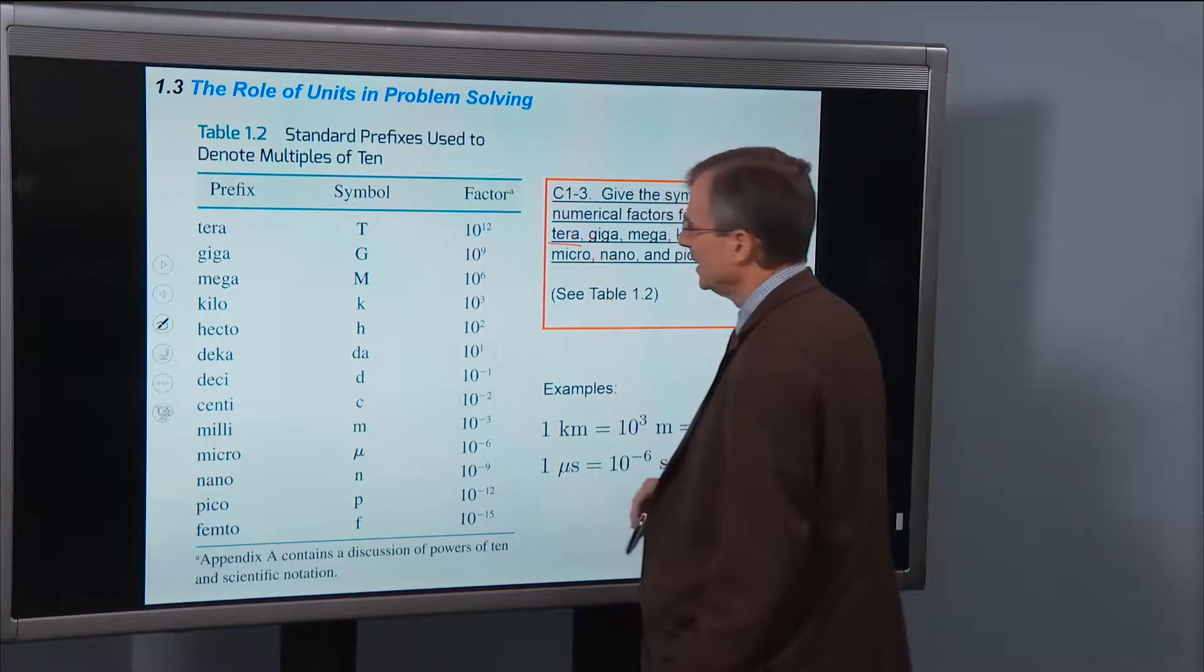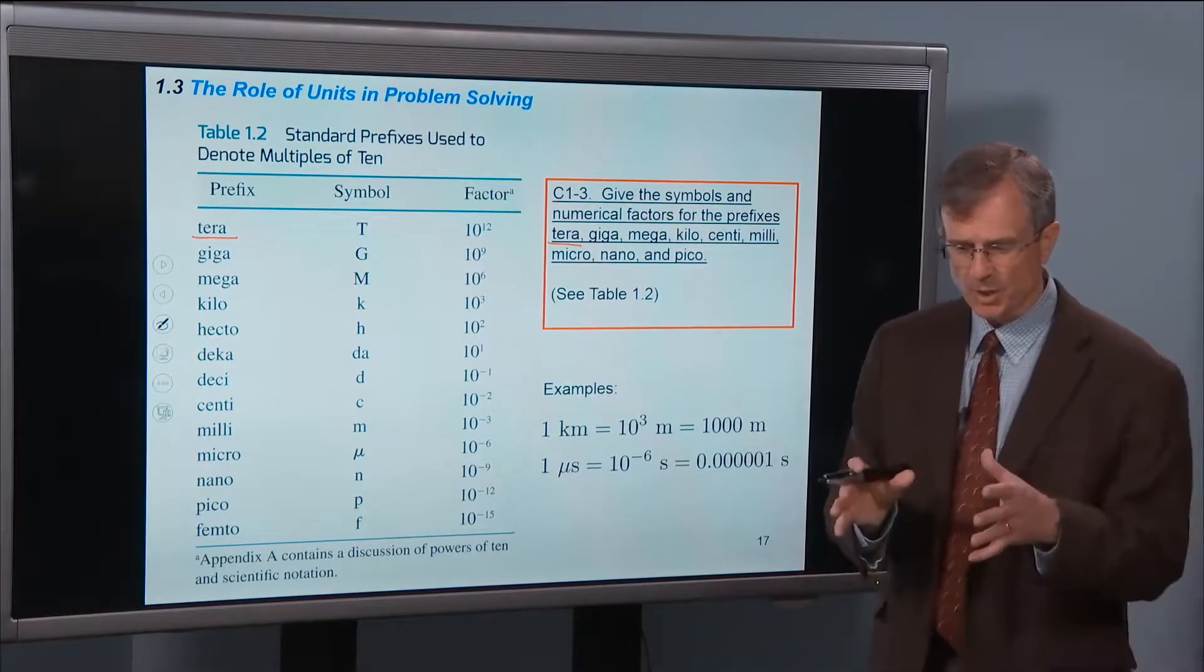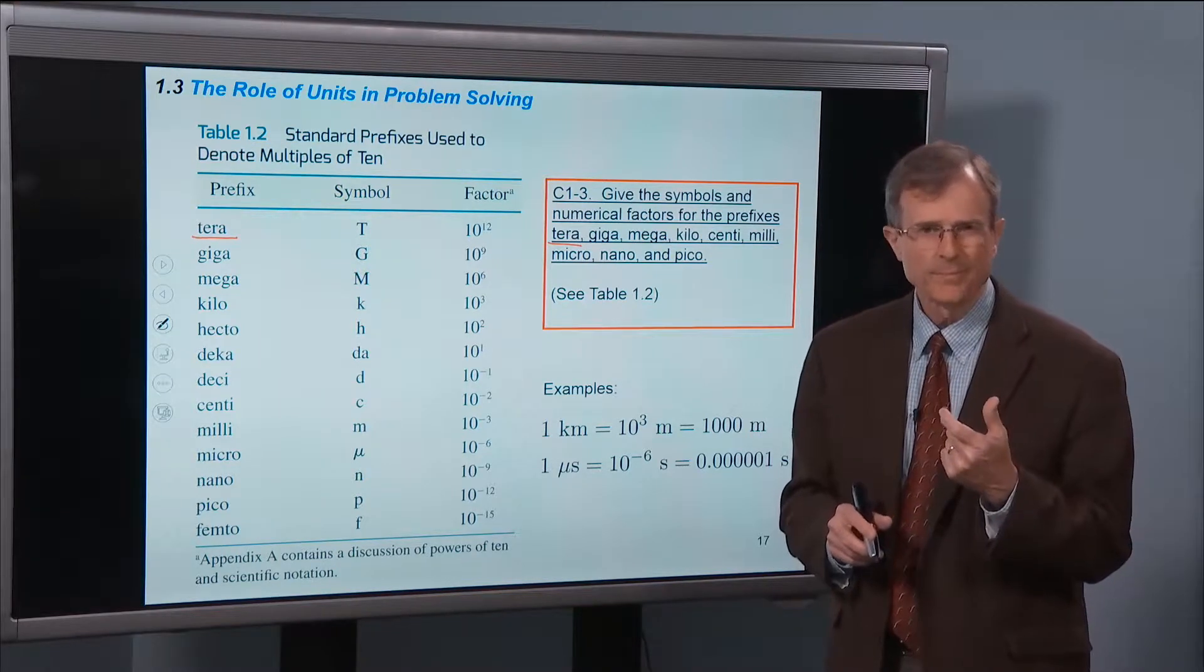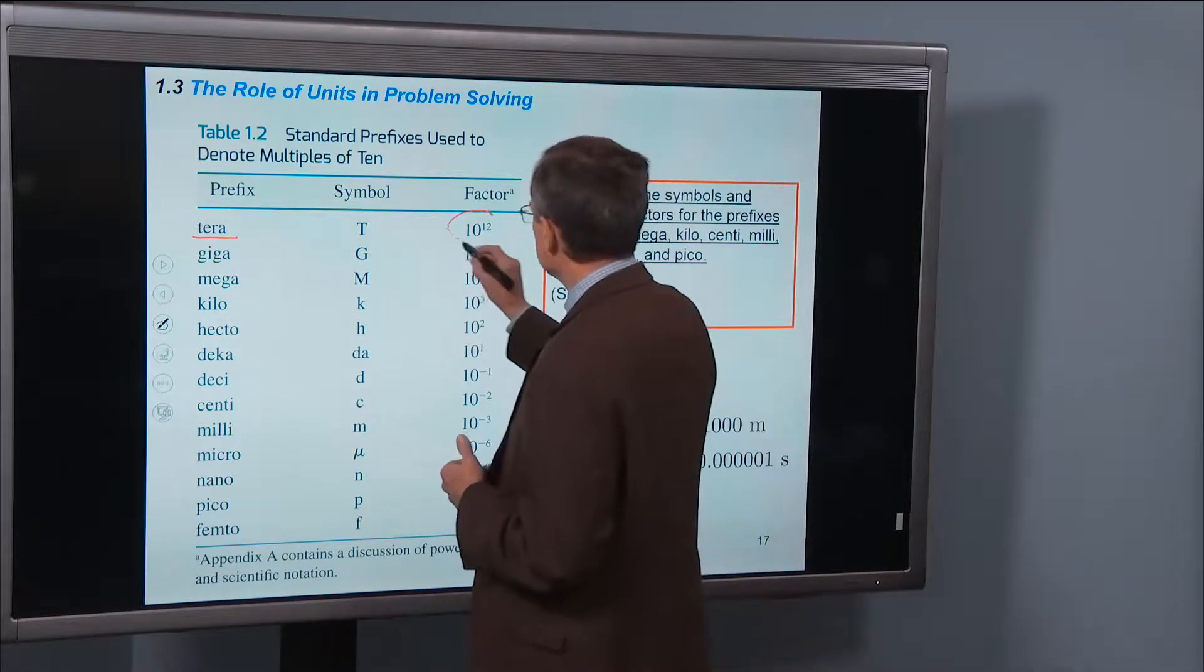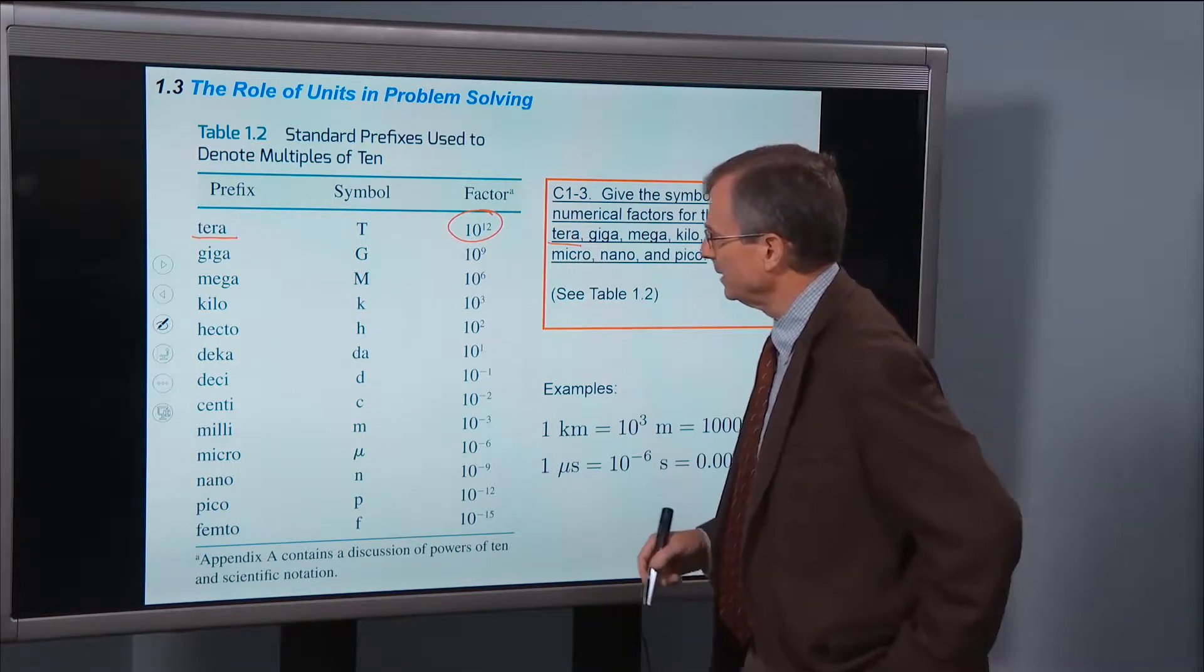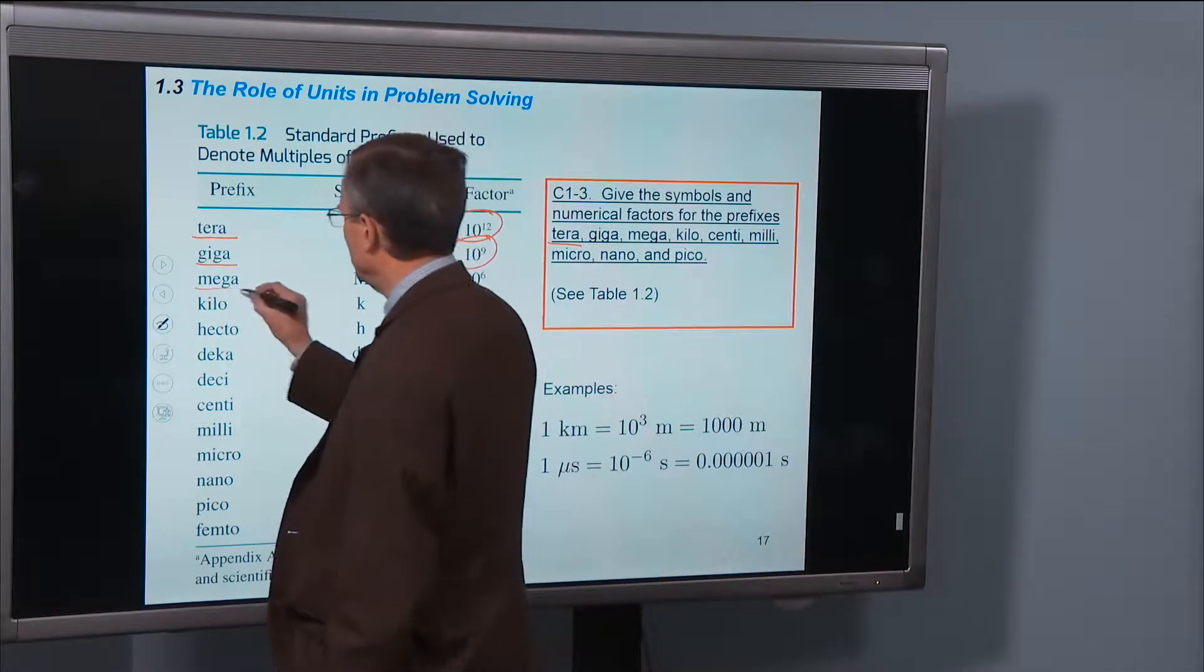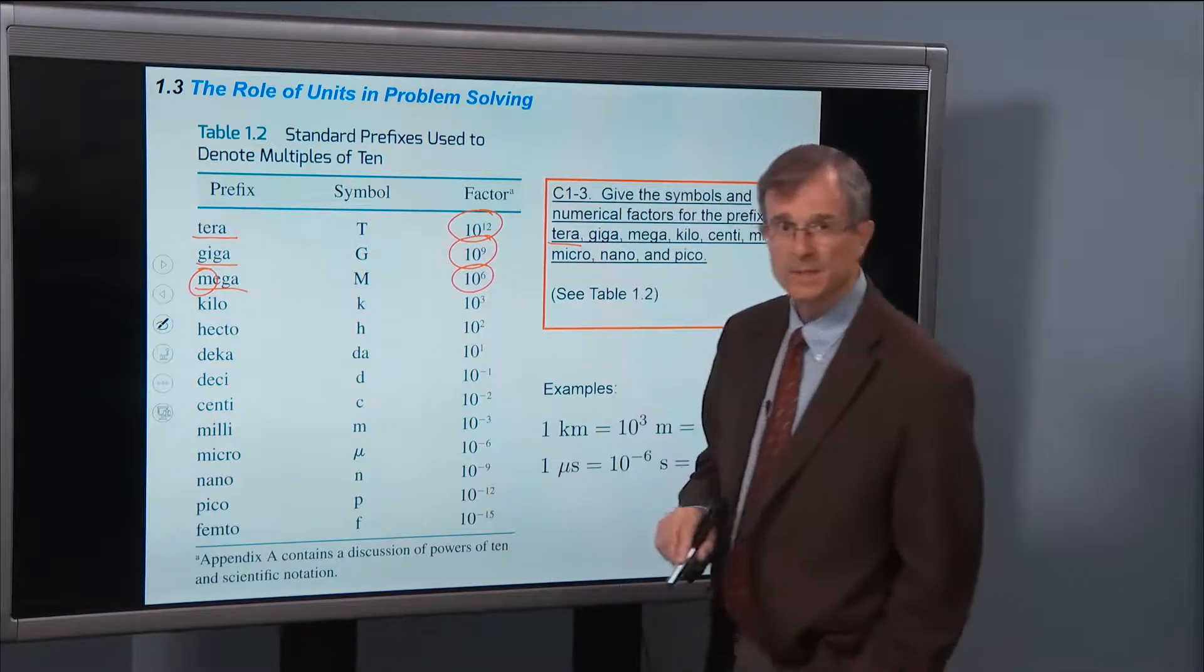I'm asking for you to know the prefixes for tera. Some of you have terabyte hard drives. A byte is 8 bits, meaning 8 binary digits. Everything for computers is measured in terms of bytes. A terabyte is 10 to the 12 bytes. A gigabyte, which a lot of memory is measured in, is 10 to the 9. A mega is a million - that's one way to remember it. The M in mega stands for million, 10 to the 6.